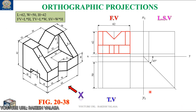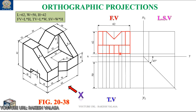For constructing the top view, from each and every edge or corner point, draw the vertical projectors to the top view. Draw all possible projectors from the front view. When you are seeing from the top side, this portion appears in the top view. This appears like one rectangle box — even though this cutting portion is there, this appears like one rectangle box. This total length is 62 mm and this width is 20 mm. Draw the rectangle box.